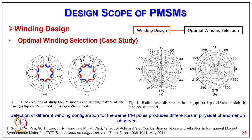As a case study of optimum winding selection, the winding pattern for an 8-pole/12-slot or 8-pole/9-slot permanent magnet motor and the radial force distribution in the air gap are compared for both cases. This illustrates the selection of different winding configurations for the same pole count producing different physical phenomena in the machine.